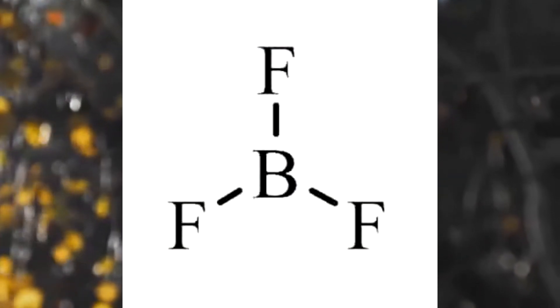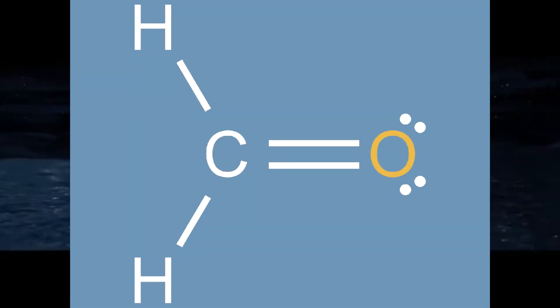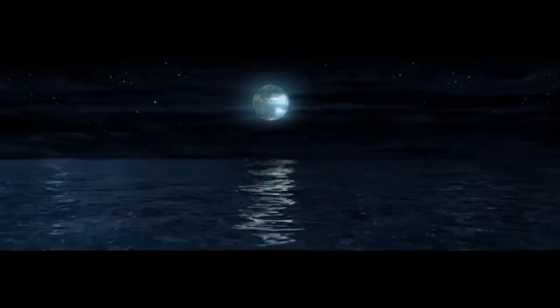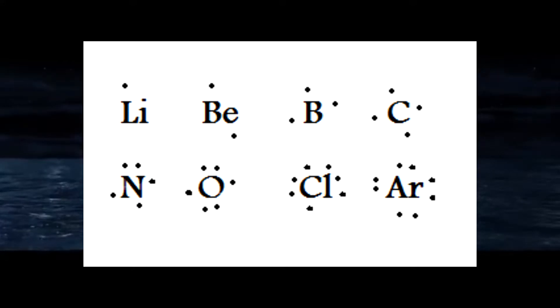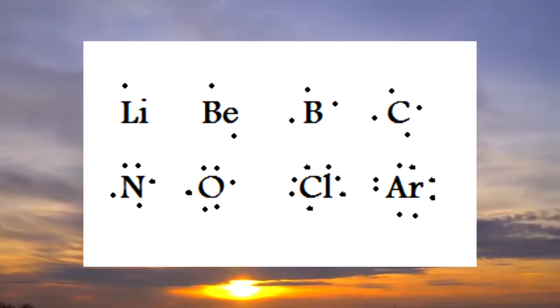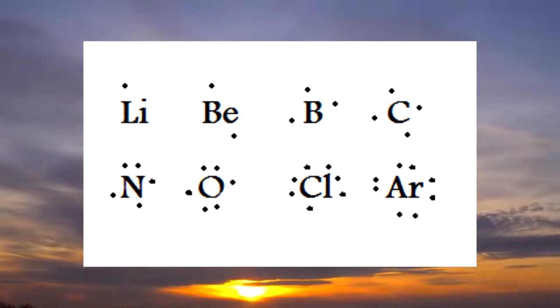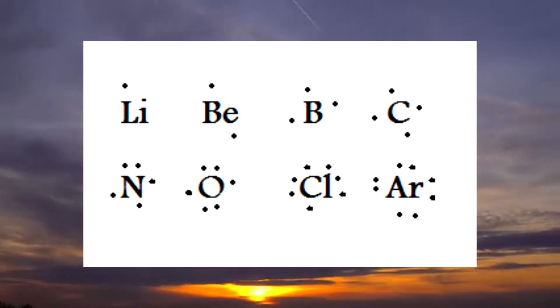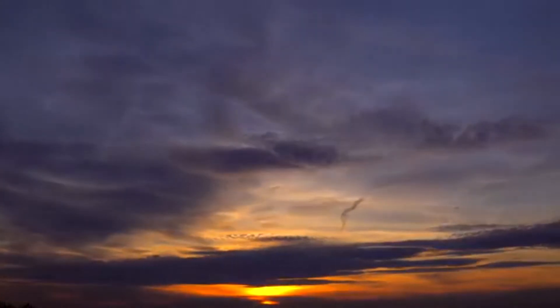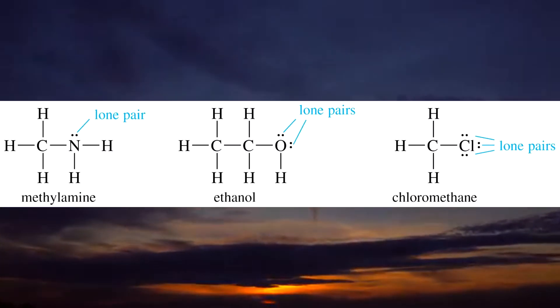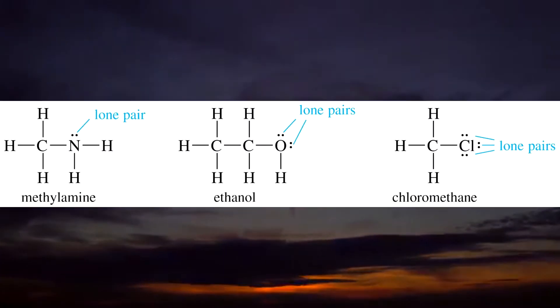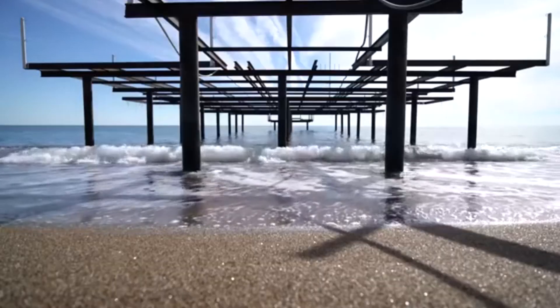An example of this would be boron trifluoride. Chemical bonds can be represented using Lewis structures, which use electron dot notation to represent the chemical bonds. In electron dot notation, dots representing valence electrons are placed around the atom symbol. Dots can be paired up if there are more than four valence electrons — these pairs are called lone pairs. In a Lewis structure, an atom's valence electrons that are not in lone pairs are paired up with the other atom's non-lone pair electrons. Sometimes there are multiple bonds between two atoms, and so more than one pair is shown in the Lewis structure.